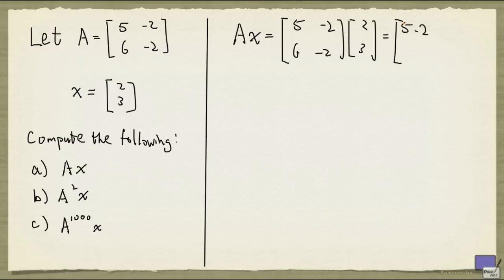And so the first entry will be 5 times 2 plus minus 2 times 3. And the second entry will be 6 times 2 plus minus 2 times 3. And that will be, so 10 minus 6 is 4, and 12 minus 6 is 6. Okay, so that's A times x. That's part A.